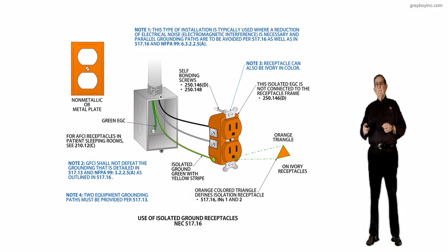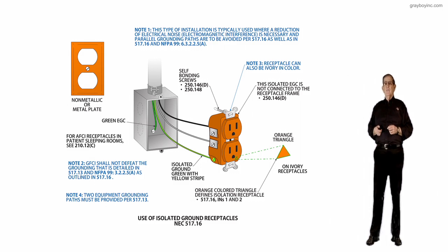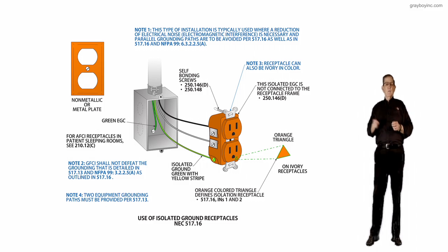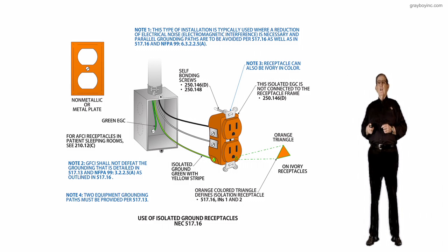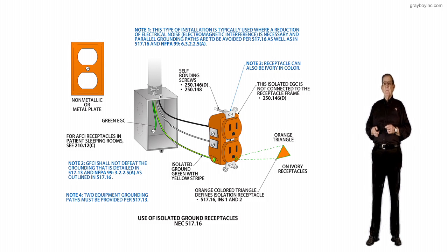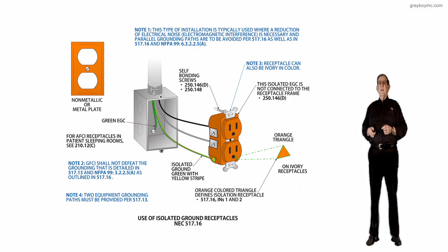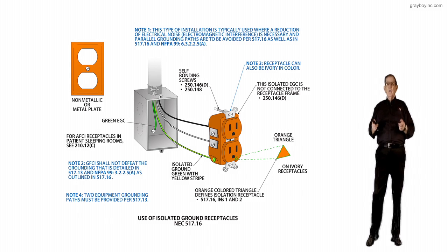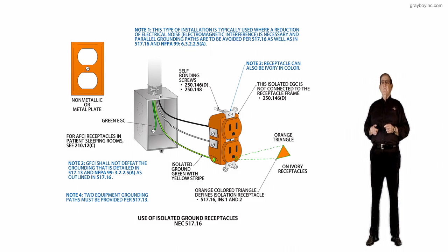Notice a lot of the existing receptacles are just solid orange, as you see in the illustration. Then some of the newer ones, instead of having to gear up as a manufacturer for a solid orange, they may have it gray with a little triangle on it. The orange colored triangle defines isolation receptacle, and notice it's on an ivory-type receptacle. This receptacle is outlined in 517.16, informational notes 1 and 2, when it's installed and used in healthcare-type facilities.